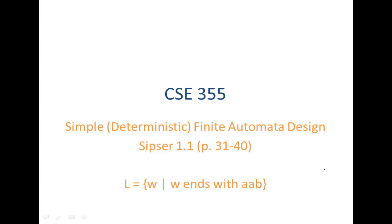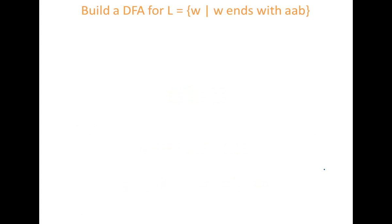Let's continue our examples from CPSR 1.1. Let's look at the language L, which is a set of strings W where W ends with AAB. So these are strings that have a suffix AAB. Again, we want to build a DFA for L.